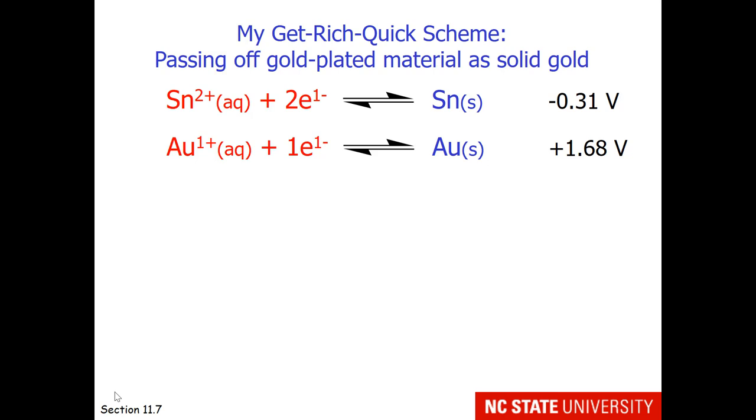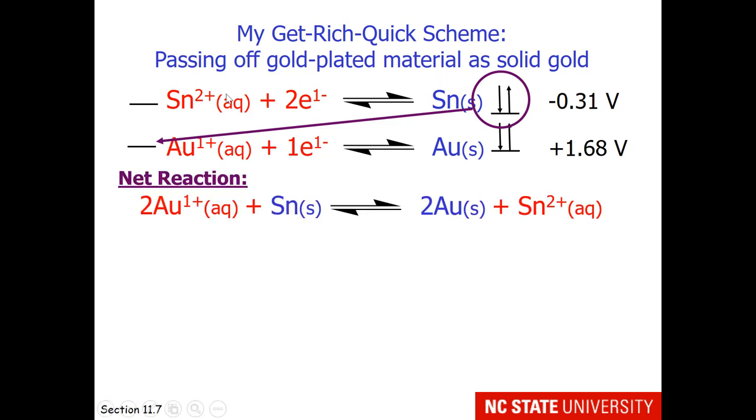Here is why you should be careful if you're buying gold overseas at a market. It's very easy to sell tin as a very inexpensive metal with a gold coating. Here are the reduction potentials for tin 2+ going to tin. This is at minus 0.31 volts. And gold can either be 1+ or 3+. I'll show you the 1+ reaction. Gold 1+ is a very good oxidizing agent with a reduction potential of plus 1.68 volts. So you can see that electrons will fall downhill from tin to gold 1+. Tin is our anode and gold 1+ is our cathode. So if we turn around the top reaction and add them in such a way that the electrons cancel, we wind up with this net reaction. We'll be converting some of our tin to tin 2+ and some of our gold 1+ into gold so that we have a thin coating of gold on top of our inexpensive tin.